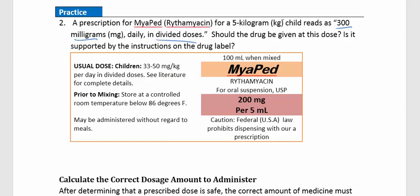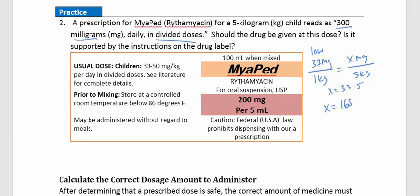For our 5 kg child, starting on the low side: 33 mg per 1 kg. We solve the proportion: x equals 33 times 5, giving us 165 mg on the low end — which would then be divided into doses.